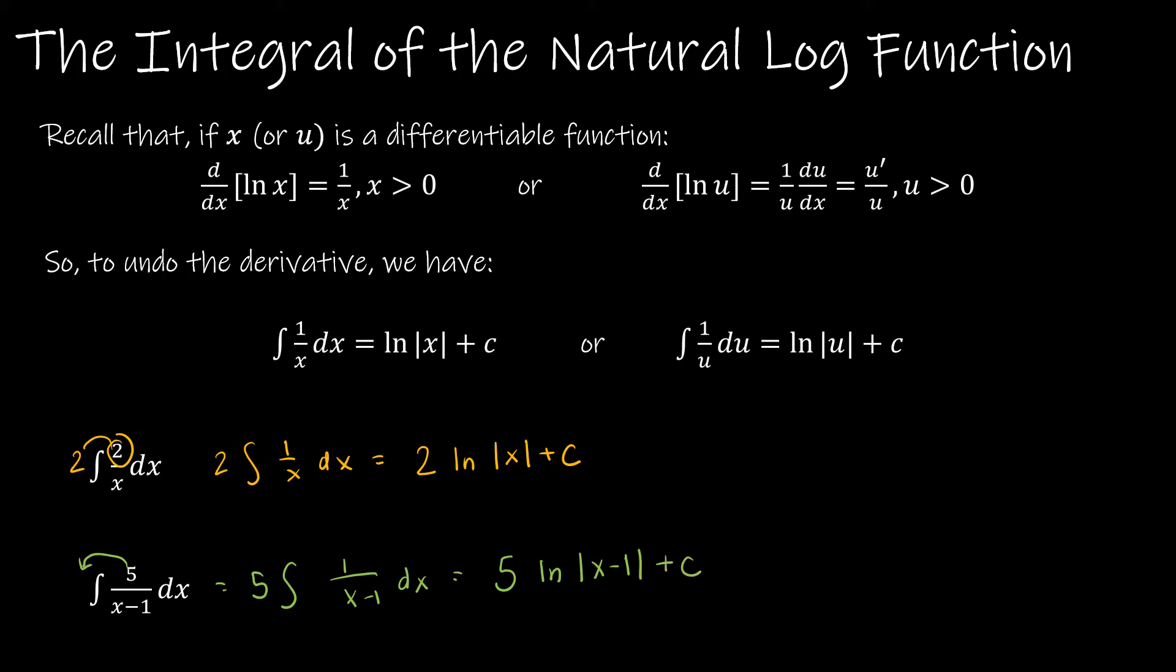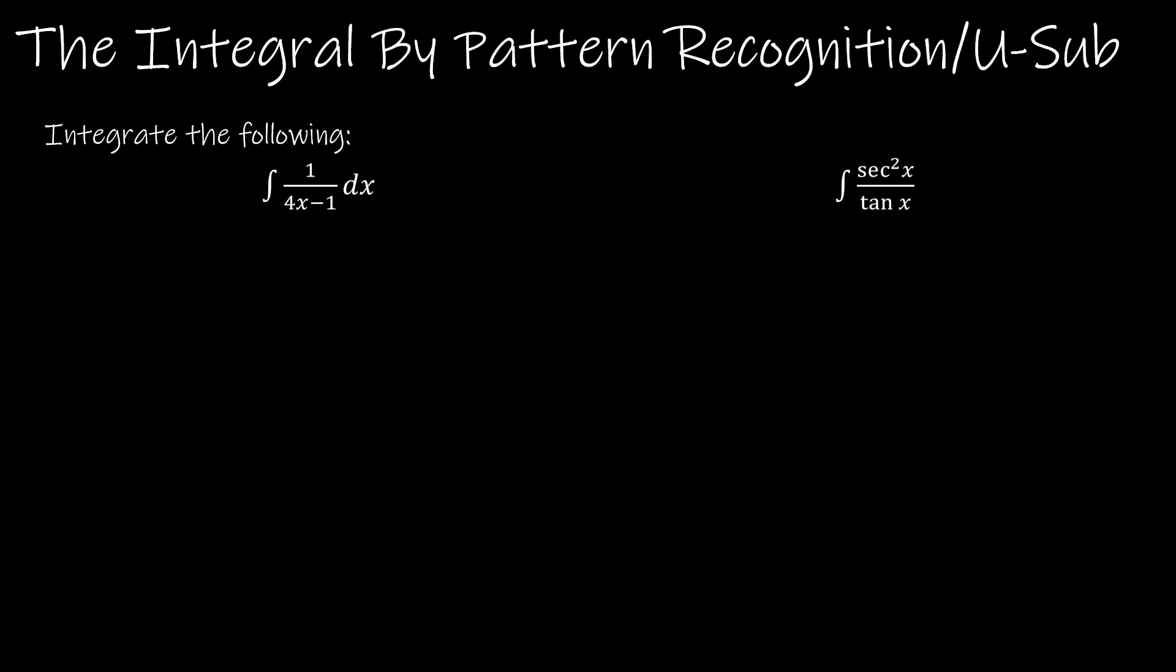We haven't had to fit a pattern yet, but let's take a look at one where we do have to fit the pattern. Starting with our first example, we would look at 4x minus 1 as being that u value. And then we have to think about what is u prime, or what is du. So du is the derivative of 4x minus 1, which is just 4 dx.